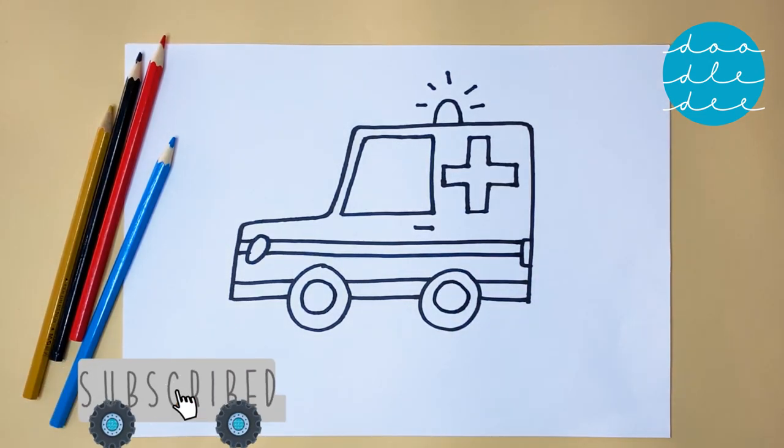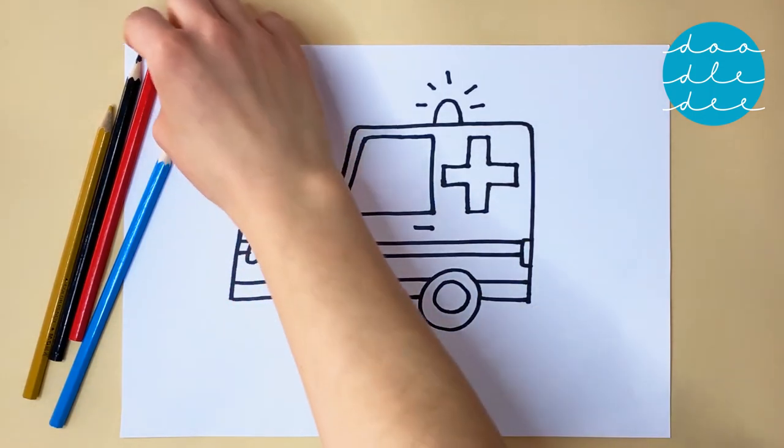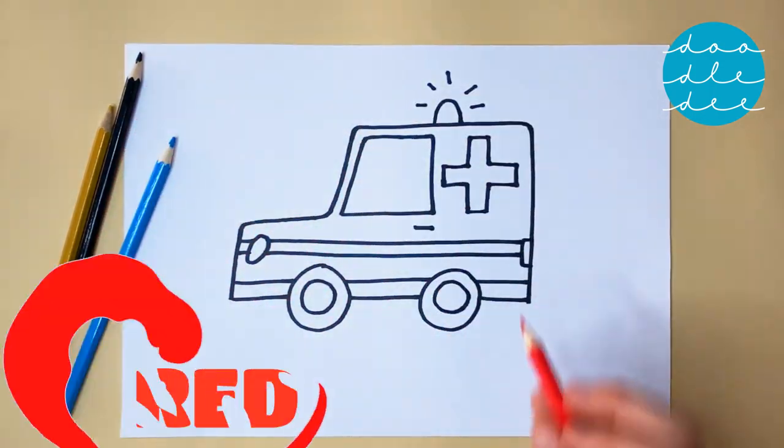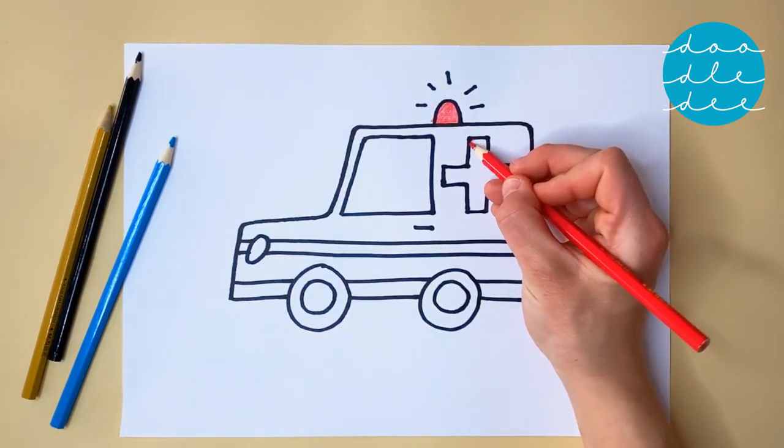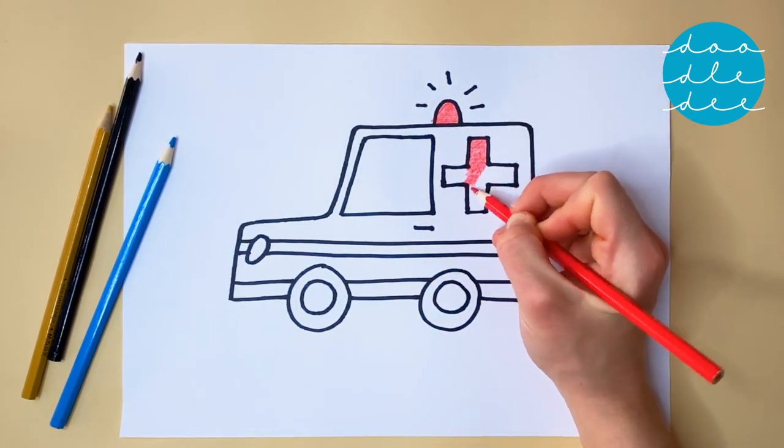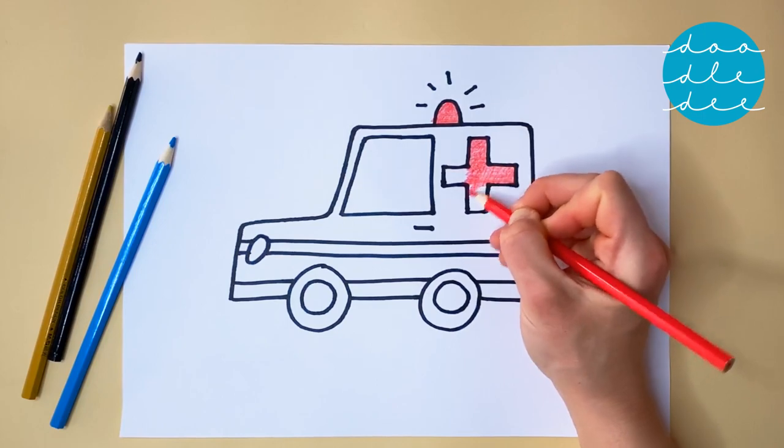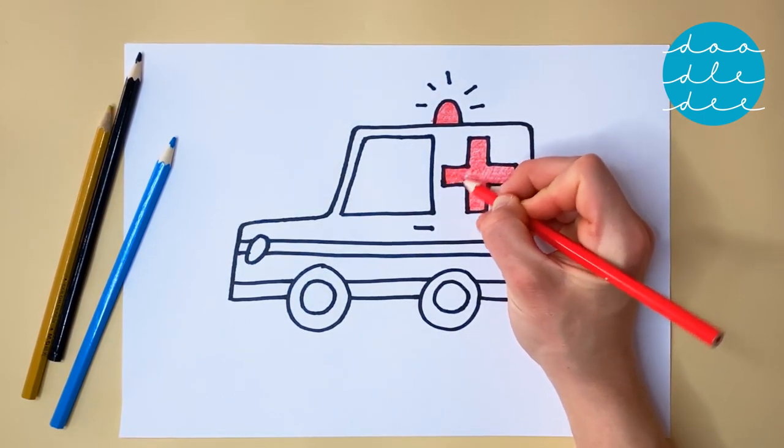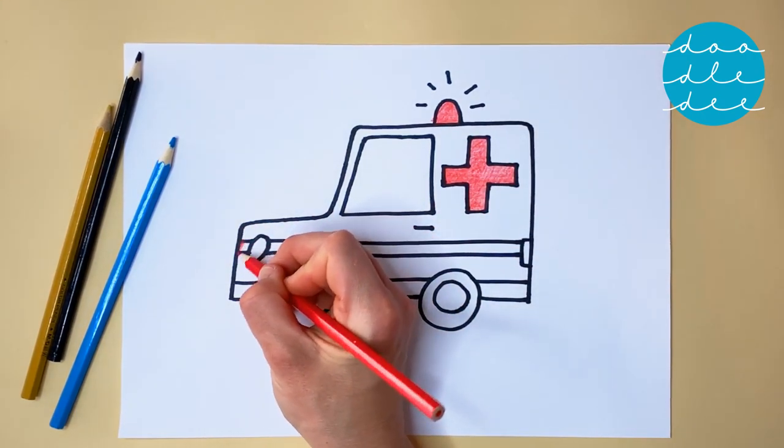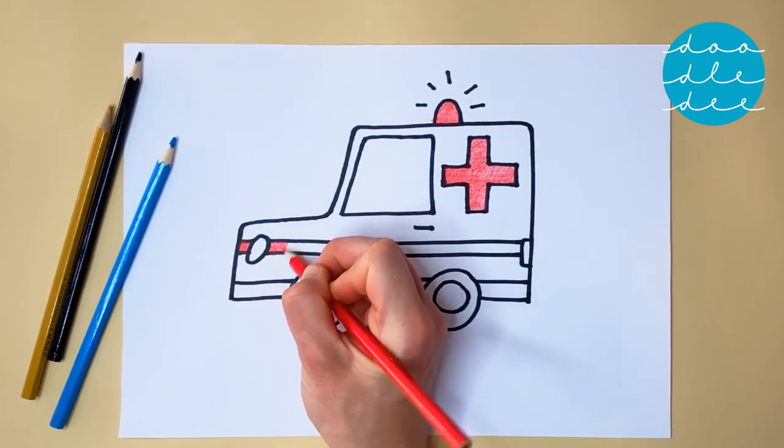Stick around until the end to see what our ambulance can do. Use red for the siren and the cross. Write red so it can be easily seen. Red for the first stripe, too. Keep inside the lines if you can.